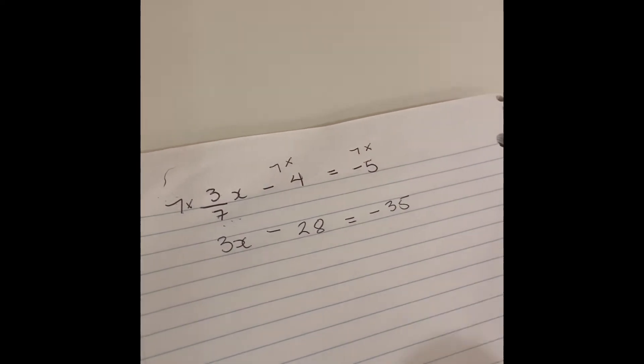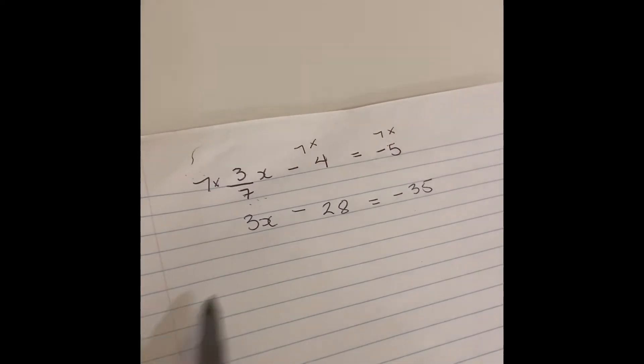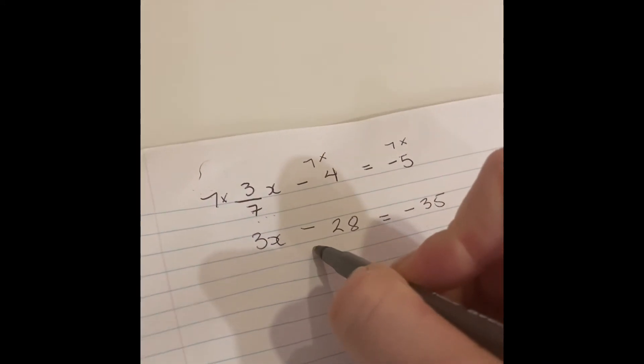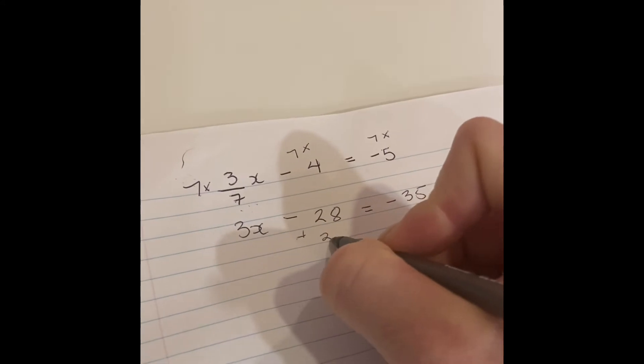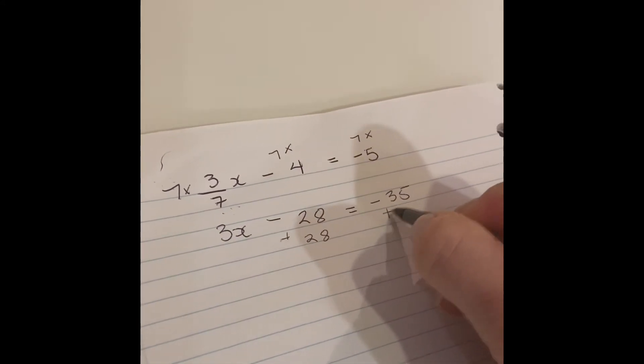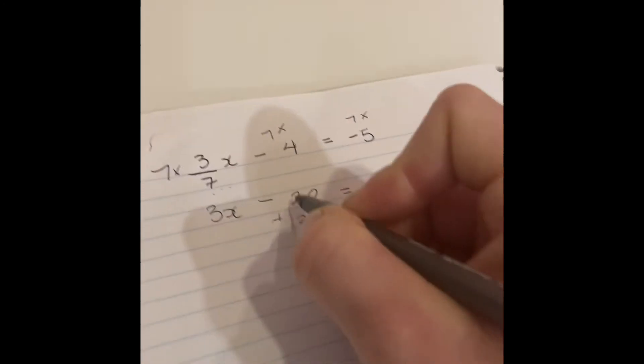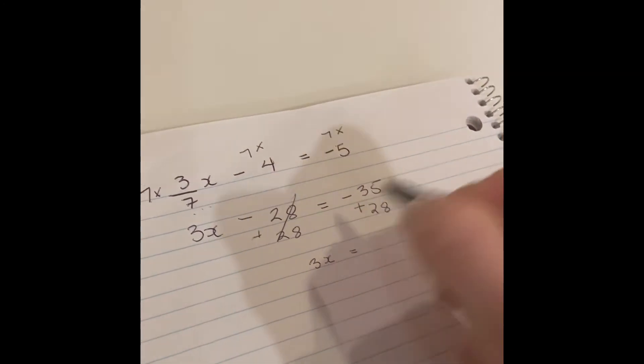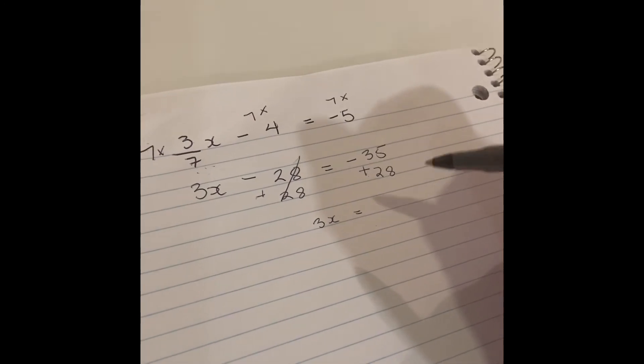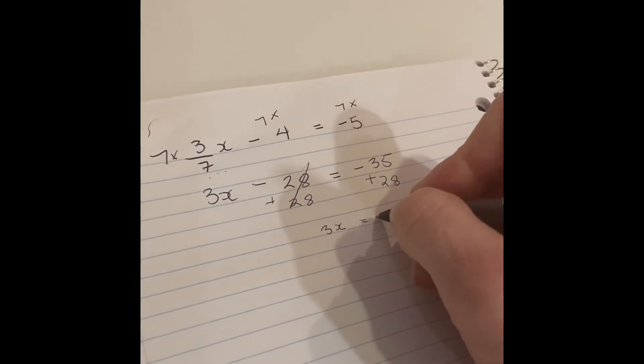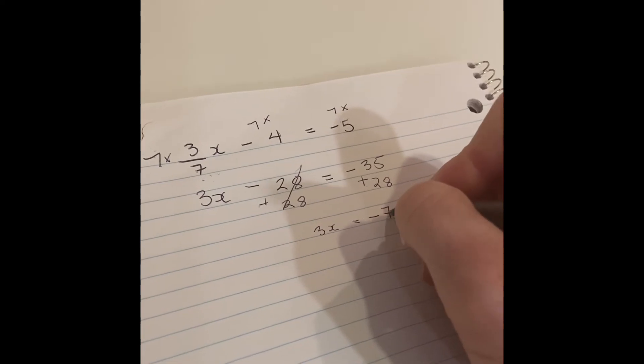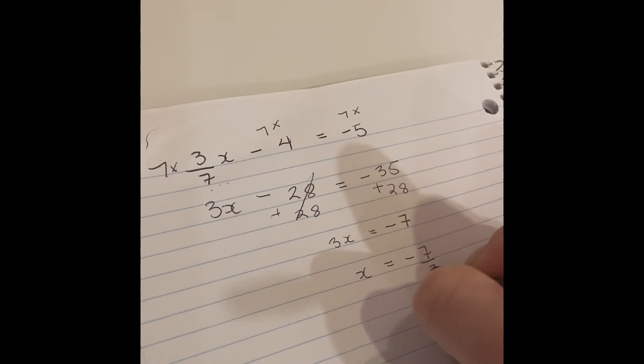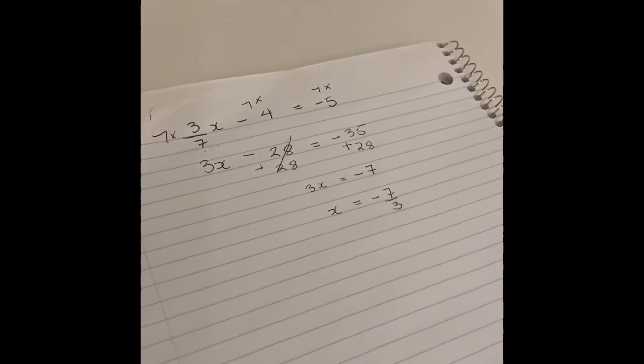And then you just go ahead and do your regular algebra where you want to get your x all alone. The first part we're going to move is the subtract 28, so I have plus 28 plus 28, and these cancel out. So I have 3x is equal to negative 35 plus 28, in my head that's going to be negative 7. So my answer is going to be negative 7 over 3.